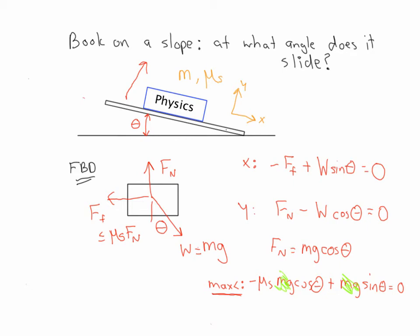What we can do is just say minus mu sub s cosine theta plus sine theta is equal to zero. Solve for mu sub s, and that gives us mu sub s is equal to sine of theta over cosine of theta. Or really, it's the tangent of theta. More accurately, it's the tangent of theta max.